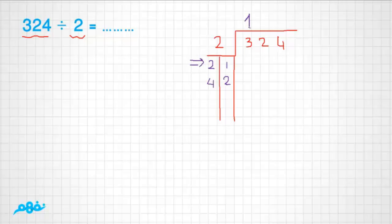Put one directly over three. Multiply one times two, which is two. Three minus two is one.